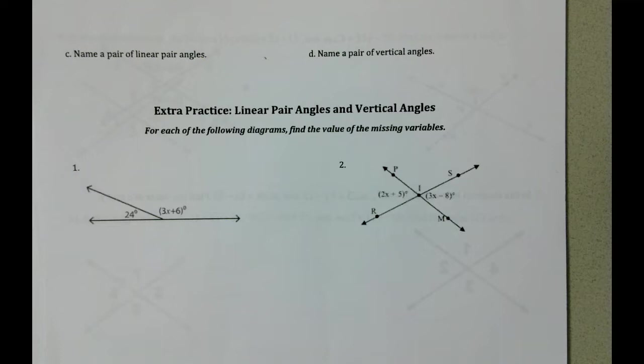For each of the following diagrams, find the value of the missing variables. So in problem number one, what we're looking at is a linear pair.